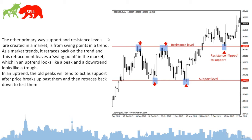The other primary way support and resistance levels are created in a market is from swing points in a trend. As a market trends, it retraces back on the trend and this retracement leaves a swing point. In an uptrend, the old peaks will tend to act as support after price breaks up past them and then retraces back down to test them.